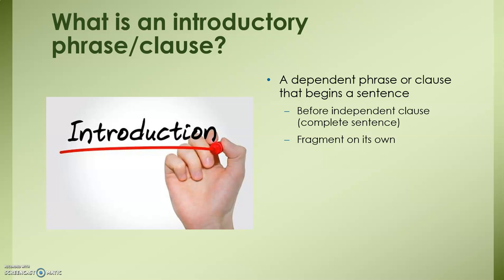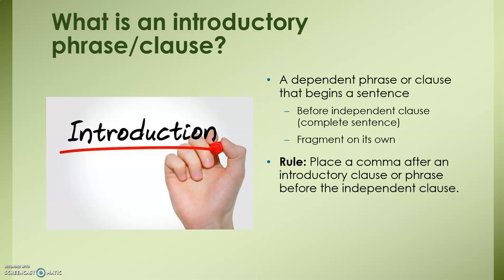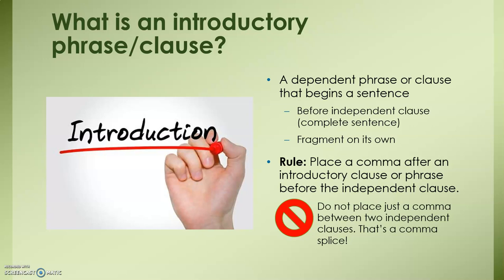The rule is that you place a comma after an introductory clause or phrase, before the independent clause. You do not, however, place just a comma between two independent clauses. That's called a comma splice, and you can learn all about those in the series on run-on sentences.